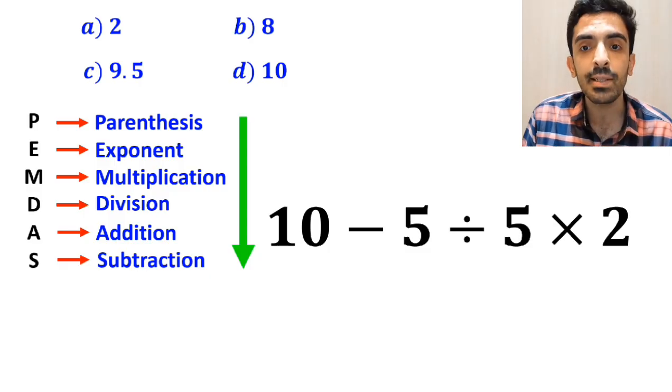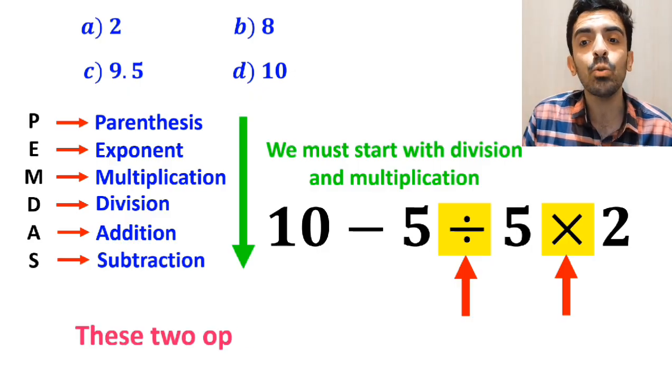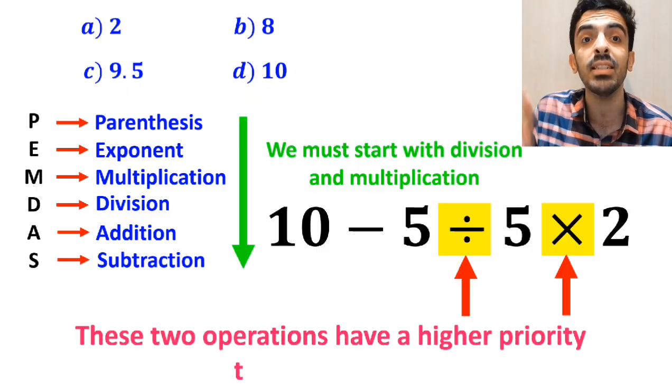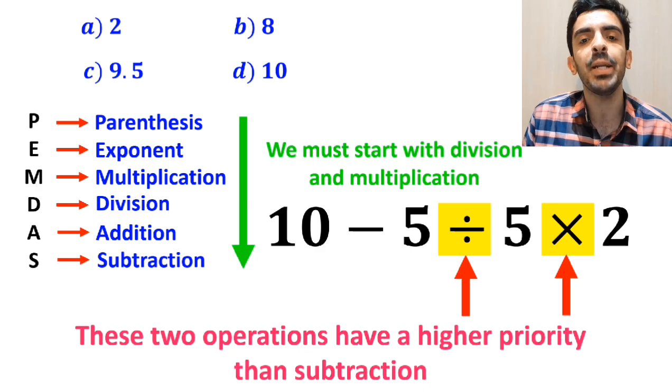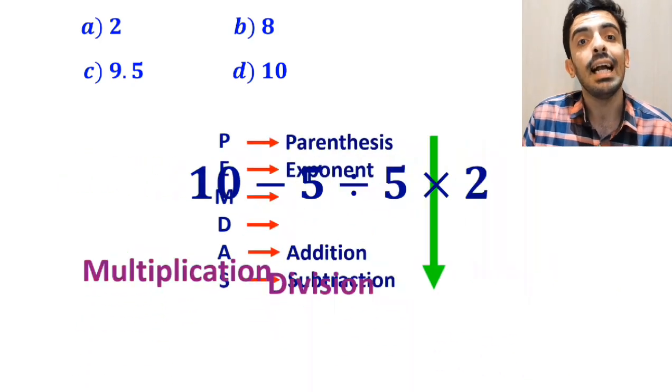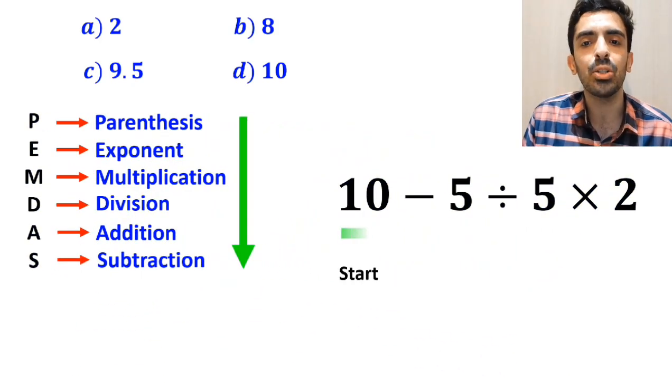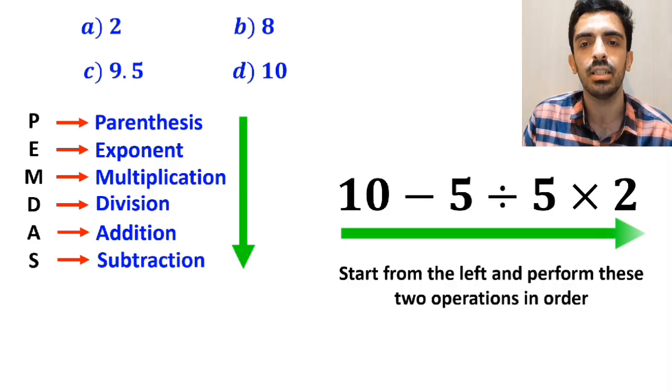Okay, according to the PEMDAS rule, we must start with the division and multiplication, because these two operations have a higher priority than subtraction. However, it's very important to keep in mind that multiplication and division have exactly the same level of priority. In this situation, the best approach is to start from the left and perform these two operations in order.